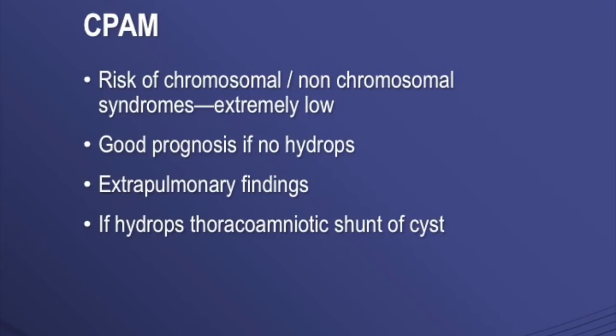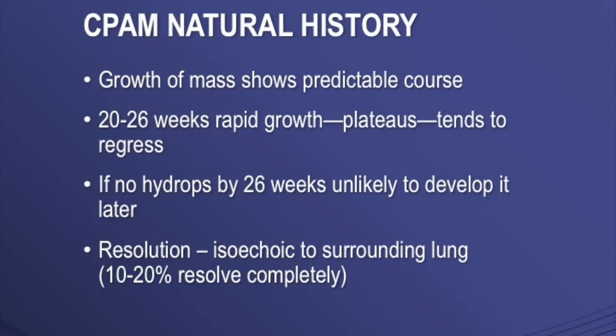The risk of chromosomal or non-chromosomal syndromes is extremely low, and there is good prognosis. If there is no hydrops and no extra-pulmonary findings, a thoracoamniotic shunt of a large cyst can be attempted. The natural history is important: the growth of the mass shows a very predictable course — until 26 weeks there is rapid growth, then it plateaus and tends to regress. If no hydrops develops by 26 weeks, it is unlikely to develop later.